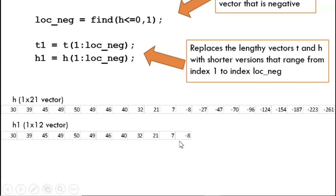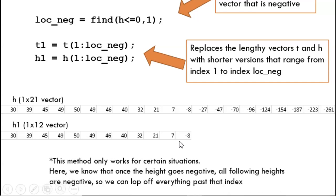Note that this approach only works for certain situations where the data is not oscillating. For our model equation, once height drops below zero, we know it is never coming back. So we can safely cut off all following indices.